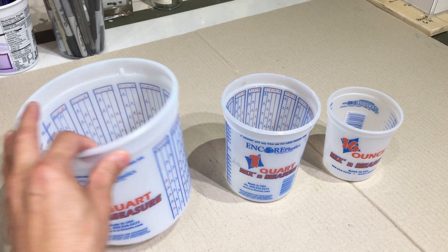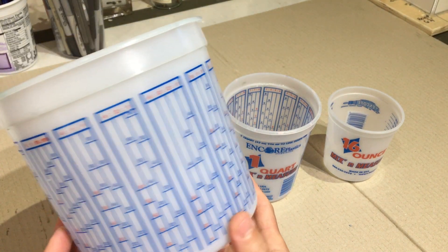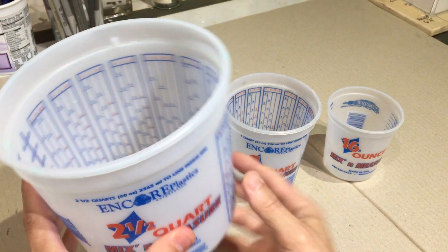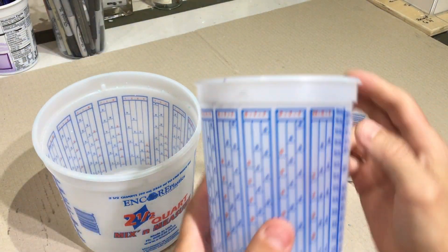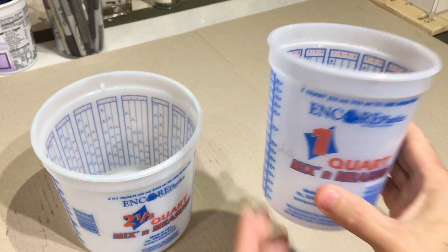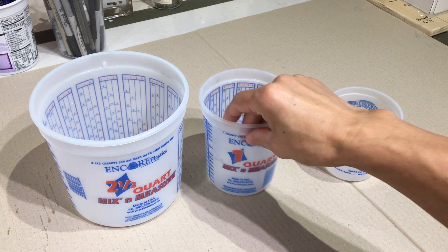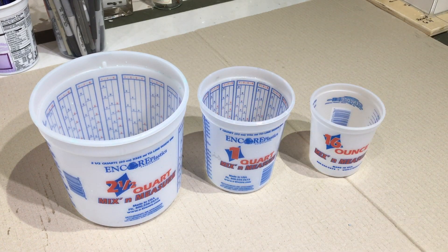First get some of these mixing containers with all these little measurements on the side here. These containers make it super easy to measure and pour the silicone. You can clean them out afterwards with a little bit of denatured alcohol. I usually have a few different sizes in my studio. I have the two and a half quart here, the one quart here, and then the 16 ounce here.